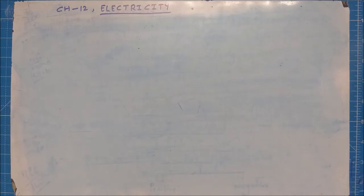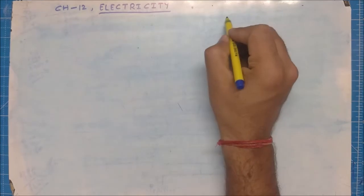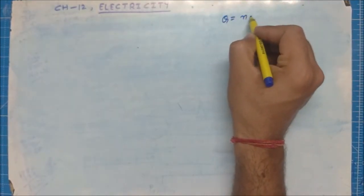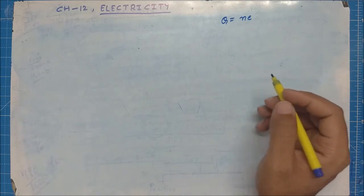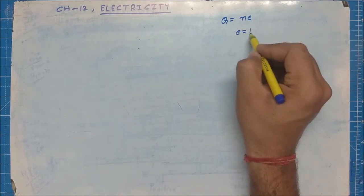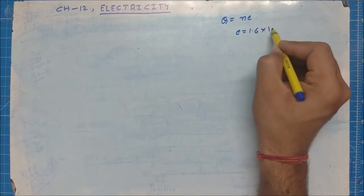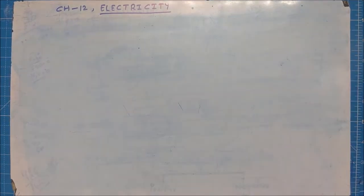Welcome back everyone to Lecture 2 of class Physics. In the last class we discussed about charge. We found a formula to calculate the charge, which was Q = ne, where n is the number of electrons and e is the charge of an electron, where e equals 1.6 × 10⁻¹⁹ coulomb. In this class we will discuss how charge flows in a material, metal, or conductor.